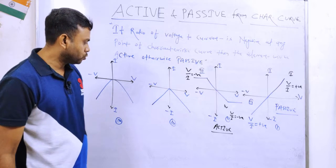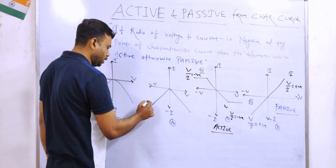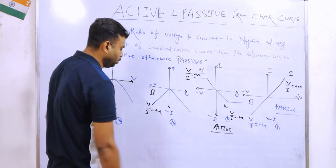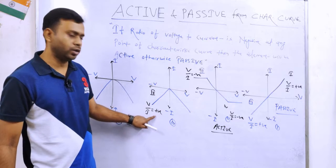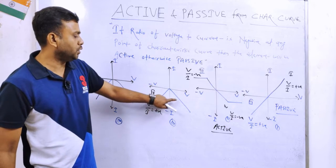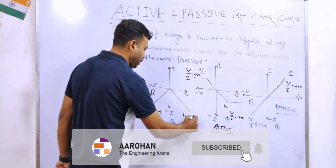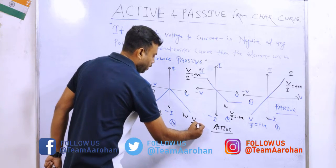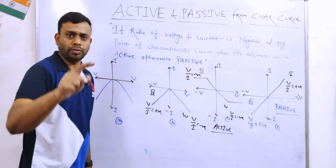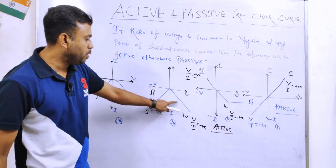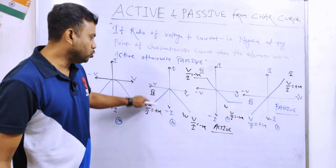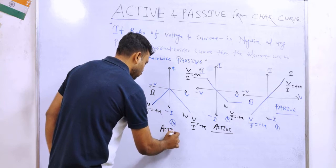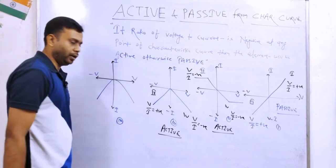Third curve देखते हैं। इसका एक half portion — यहाँ V negative और I negative है, तो V by I ratio positive रहेगा। लेकिन जैसे ही हम इसके दूसरे half में जाते हैं, यह आ रहा है fourth quadrant में — जहाँ voltage positive है लेकिन current negative है, इसलिए V by I ratio negative हो जाएगा। और हमारा concept यह है कि यदि curve के किसी भी point पर V by I ratio negative हो, तो वो curve drawn है for an active element — so this is also a curve for an active element.